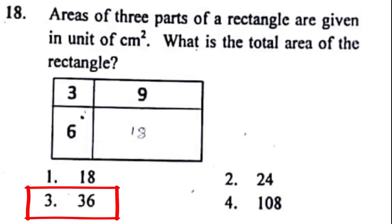Problem number 18: Areas of 3 parts of a rectangle are given in units of centimeter squared. What is the total area of rectangle? The correct answer to this problem is option 3, that is 36.